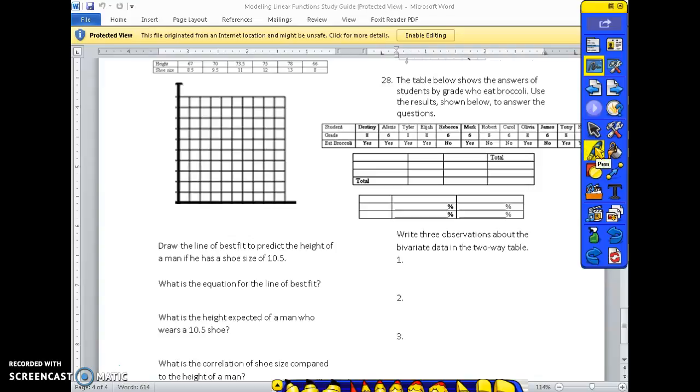Look at 28. The table below shows the answers of students by grade who eat broccoli. Use the results shown below to answer the questions. So, we have students in 3 different grades, 6th and 8th graders. And we have whether they eat broccoli or they don't eat broccoli. Setting up the table: 4th and 8th graders. 7 of them are 8th graders. 5 of them are 6th graders. 8 of them said yes. 4 of them said no. There are 12 total.